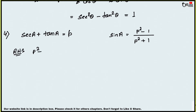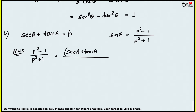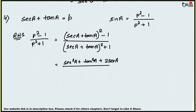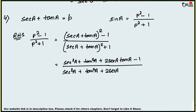The RHS is (p² - 1)/(p² + 1). Substituting p = sec a + tan a: the numerator becomes (sec a + tan a)² - 1 and the denominator becomes (sec a + tan a)² + 1. Expanding (sec a + tan a)²: numerator gives sec²a + tan²a + 2 sec a tan a - 1; denominator gives sec²a + tan²a + 2 sec a tan a + 1.